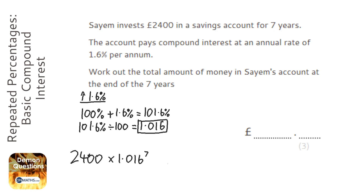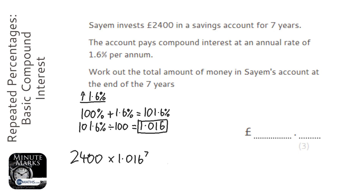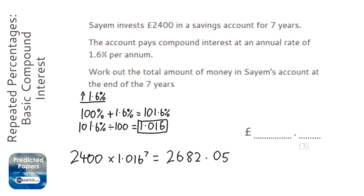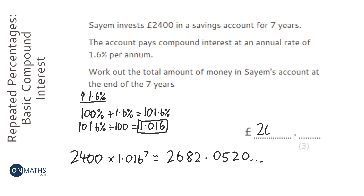So on the calculator: 2400 times 1.016, then press the power button and type in 7. That gives the answer 2682.0520... Because it's a money question it can only have two decimal places, so the answer is £2682.05.